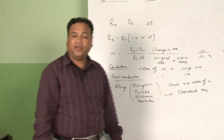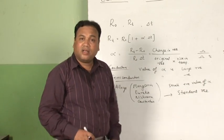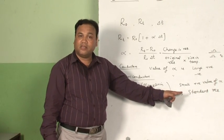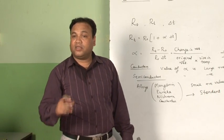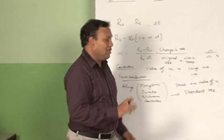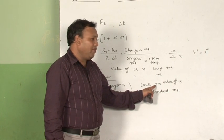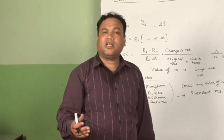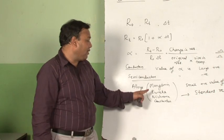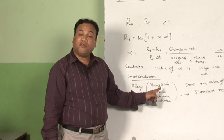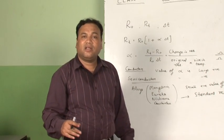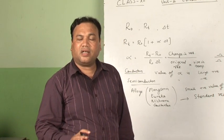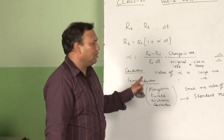This comes up frequently in board exams: why are manganin, eureka, nichrome, and constantin used to make standard resistance coils? Two reasons: first, they have a very small positive value of alpha, so change in resistance with temperature is very less; second, these alloys have a high value of resistivity. Because of their high resistivity and small positive temperature coefficient of resistance, they are used to make standard resistance coils.